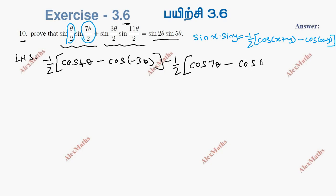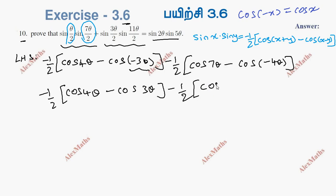Applying the formula, we get sin 5 theta sin 2 theta equals minus half of cos 7 theta minus cos 3 theta, and sin 7 theta sin 4 theta equals minus half of cos 7 theta minus cos 4 theta.